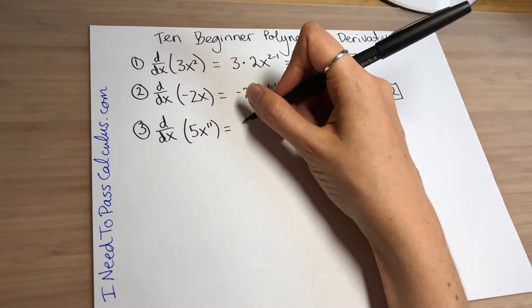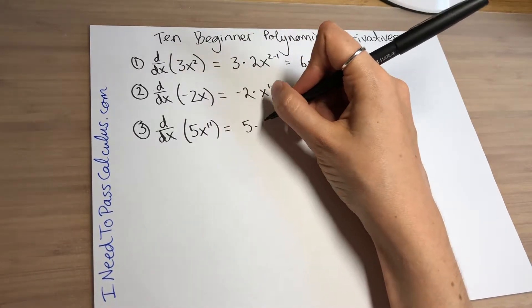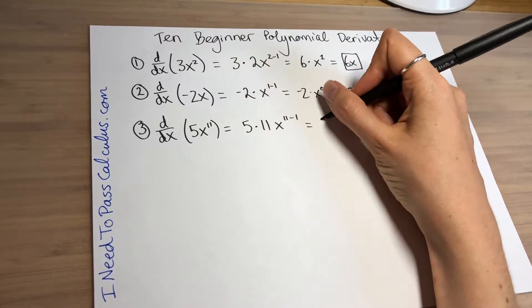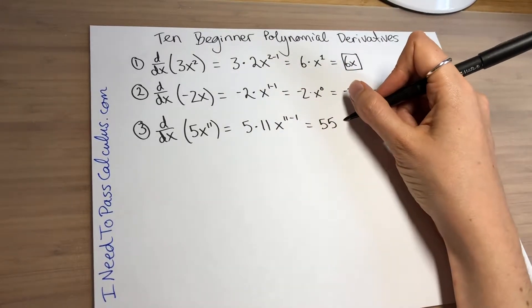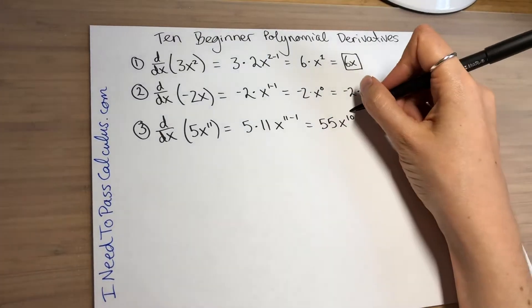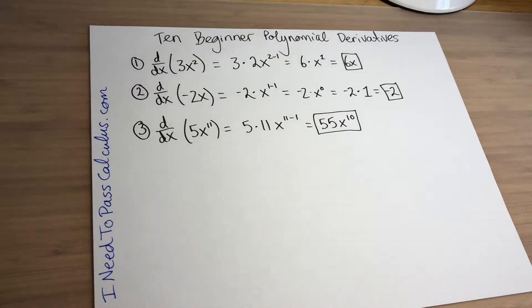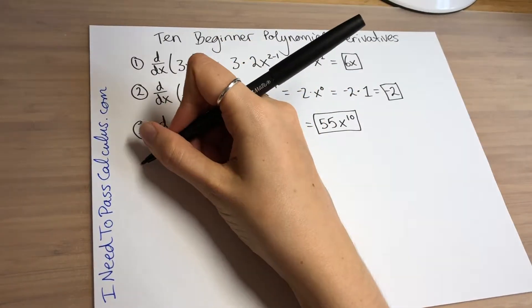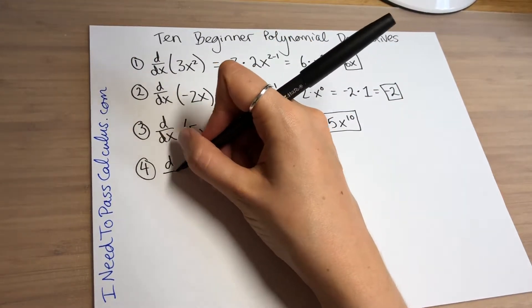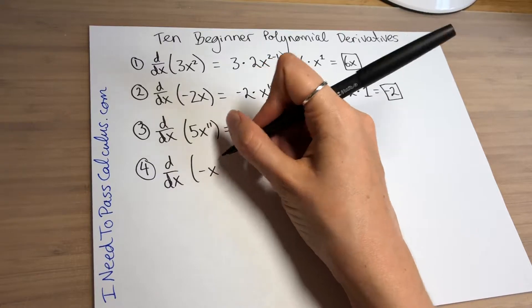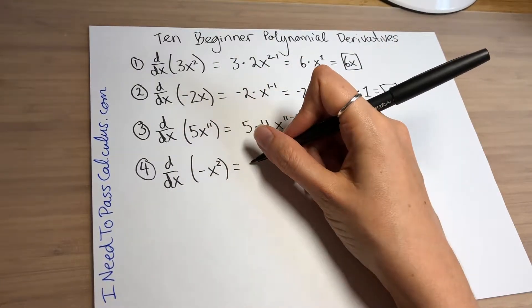For problem number 3, the derivative of 5x to the 11: the 5 stays out front, the 11 in the exponent comes down to join the 5 with multiplication giving you 55 out front, and the exponent becomes 11 minus 1. You end up with 55x to the 10th power.